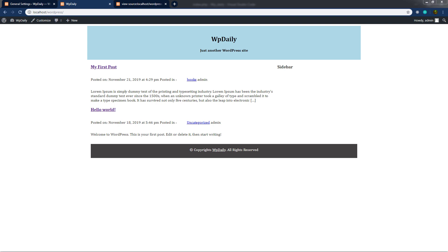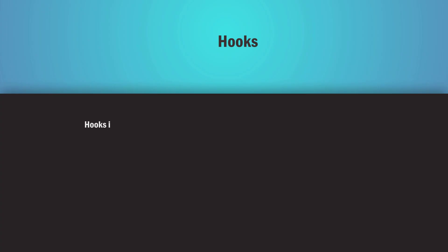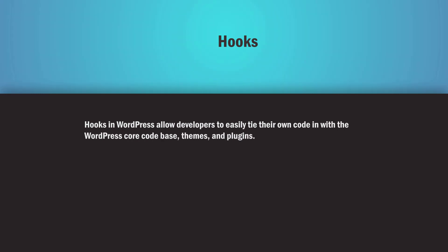In this lecture we're going to understand what action and filter hooks are in WordPress, and we're also going to see how to create a very useful file for the WordPress theme: functions.php. Hooks in WordPress allow developers to easily tie their own code in with the WordPress core code base, themes, and plugins. The hooks refer to the place where you can add your own code or change what WordPress is doing or outputting.